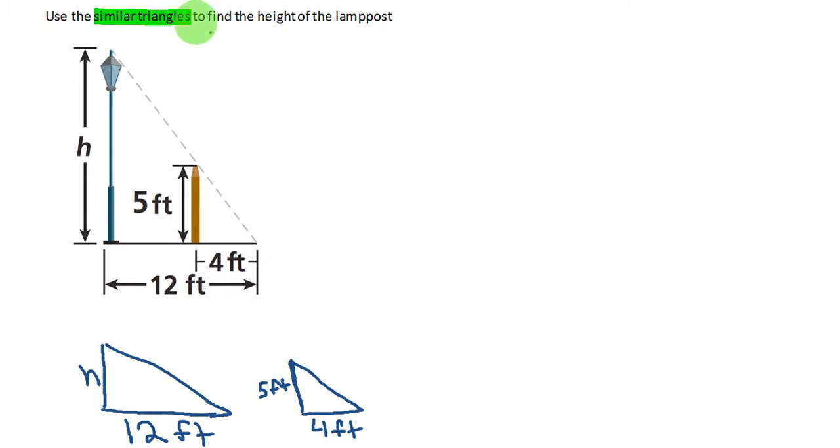So once I've separated it, the information just kind of stands out a little bit easier, and I can put a little divider in between these two values, and also here, and I have my proportions set up as h is to 12 as 5 is to 4.